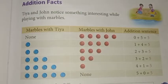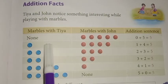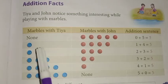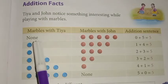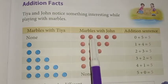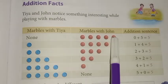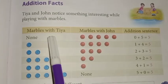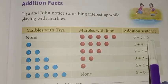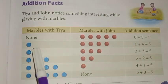Let's study addition facts. Look at the picture — Ti and John are playing with marbles. In the first column there are zero marbles with Ti. How many marbles are with John? One, two, three, four, five. So we can add: zero plus five equals five.